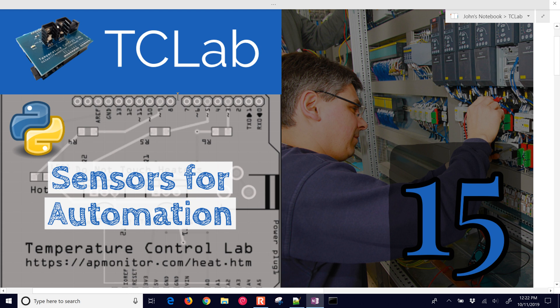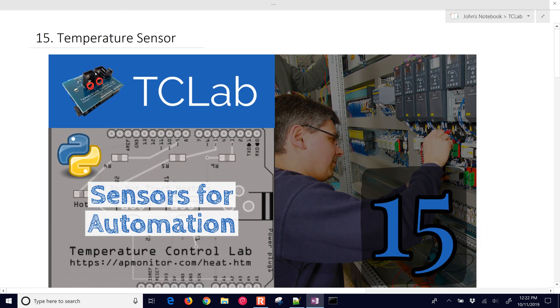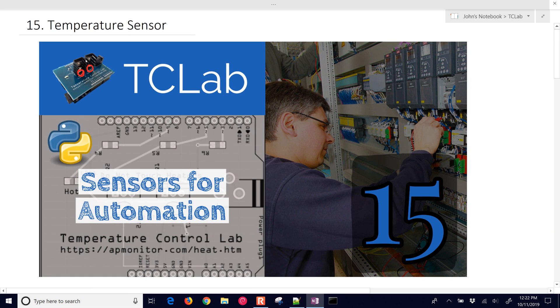Viewing the sensors in the temperature control lab, these are the little thermistors that are sensing the temperature. We're going to talk about how they work and sensor characteristics. In automation, these are sensors coming from devices that are being processed and then give a digital signal so that control can happen or they can be displayed on a screen. In typical chemical plants or refineries, there are thousands of sensors measuring things like pressure.